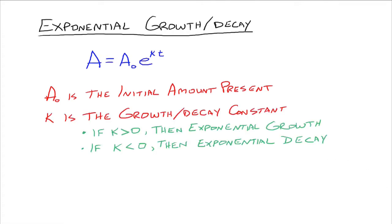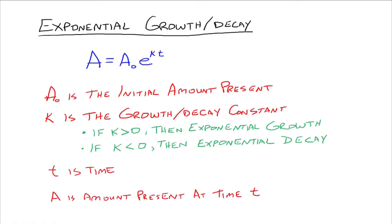Then we have K, which is called the growth-decay constant. If K is greater than zero, then we have exponential growth. If K is less than zero, then we have exponential decay. T is time, and A is the amount present at time T. Time could be in minutes, days, years — whatever unit we're working with. That's what all the variables mean for our formula.